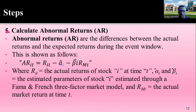The next step is to calculate abnormal returns — the difference between the actual returns and the expected returns during the event window. The formula for abnormal returns uses actual returns for stock i at time t, where alpha and beta are stock-specific parameters estimated from the model. After the event occurs, you compare actual returns to what was expected; that difference is the abnormal return.